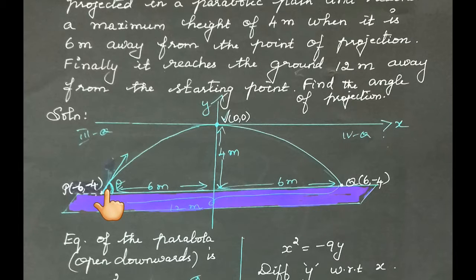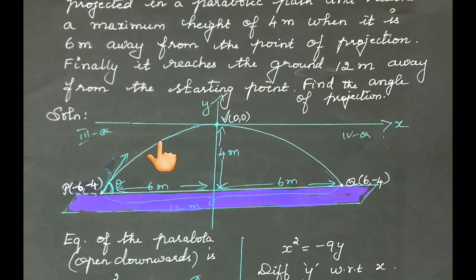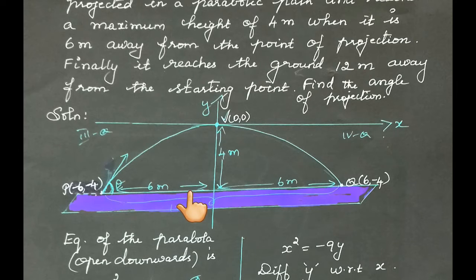On lighting a rocket cracker, it makes a parabolic path. It reaches a maximum height, then comes back to the ground. When the maximum height is 4 meters, the horizontal distance at that point is 6 meters.